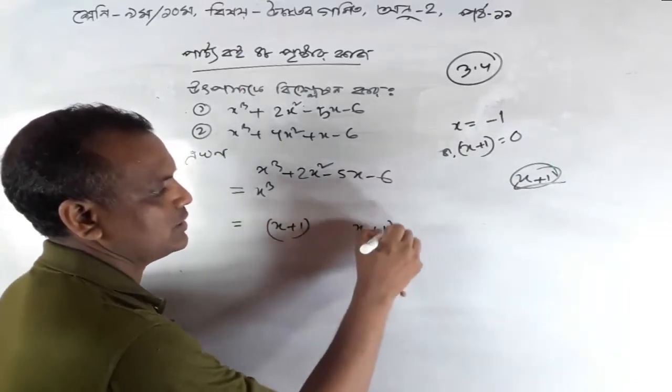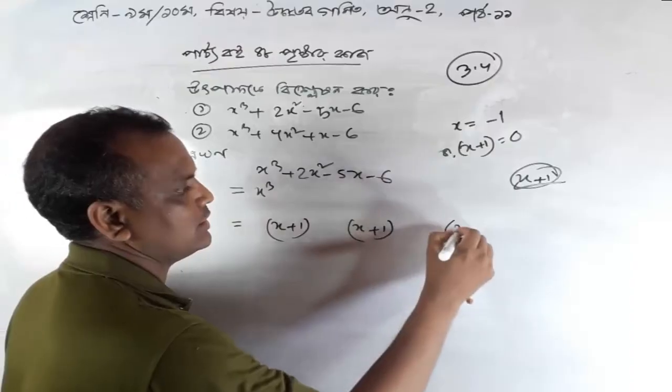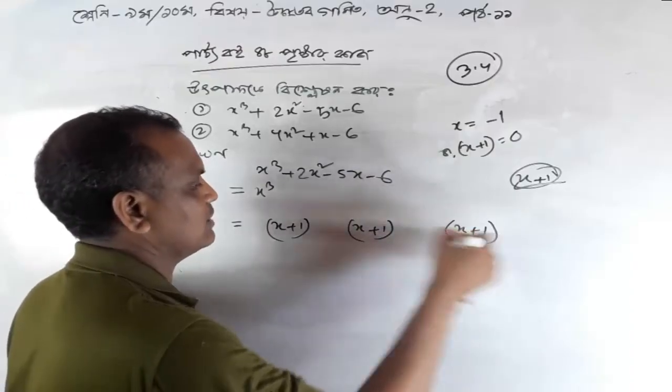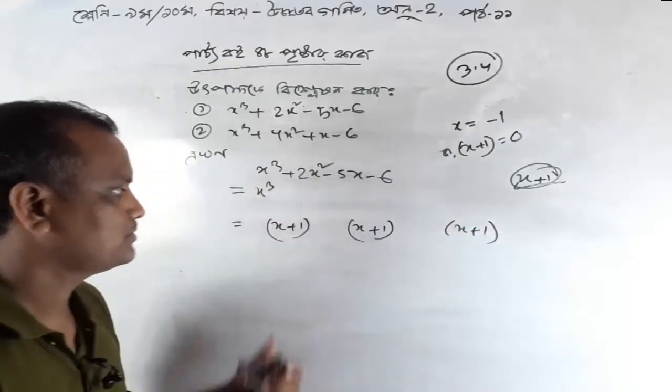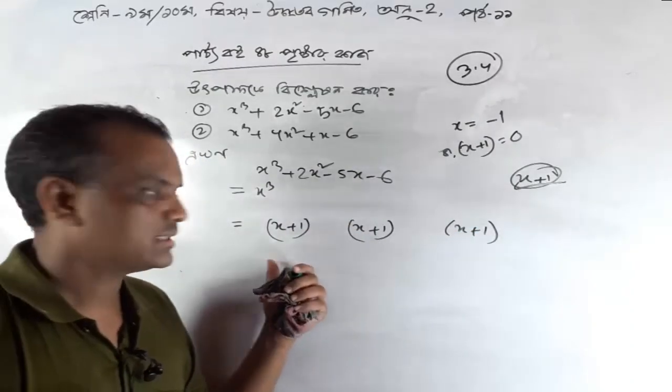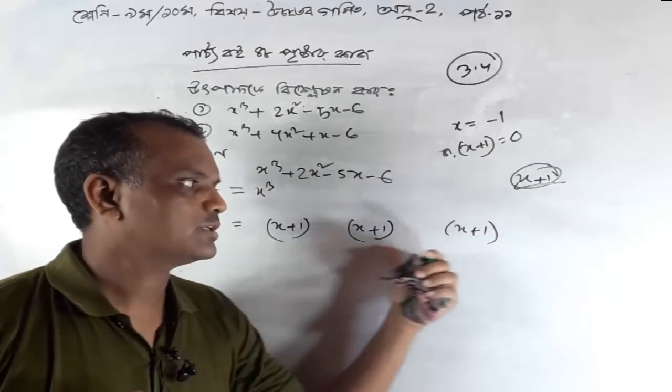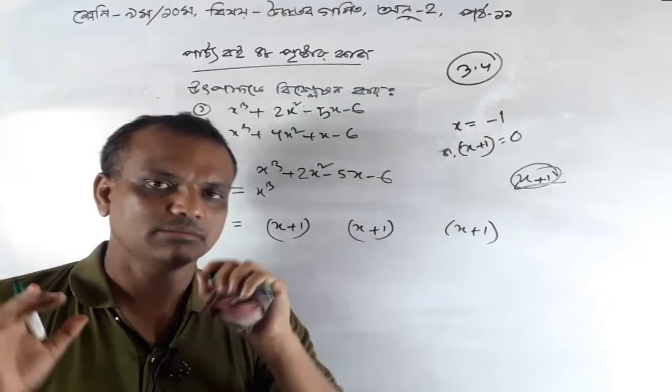There we go — this way we're doing a unrings x plus 1, x plus 1, x plus 1, x plus 1, x plus 1, x plus 1, x plus 1.